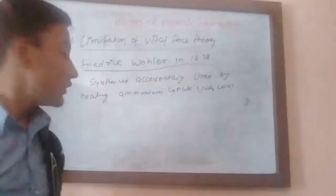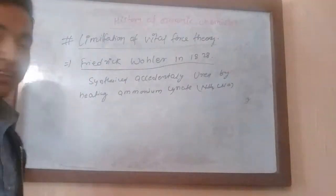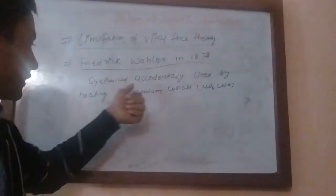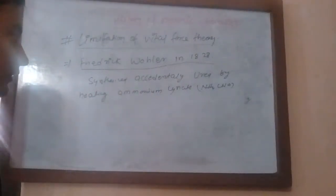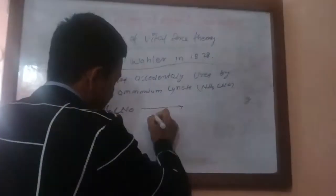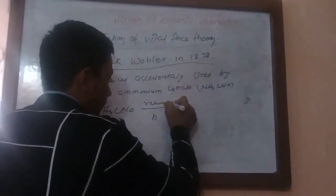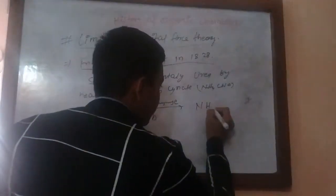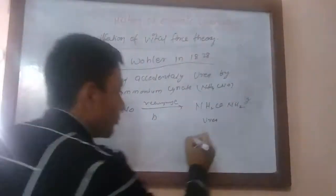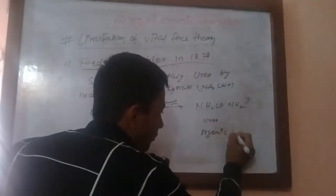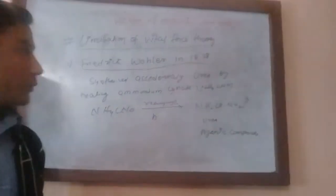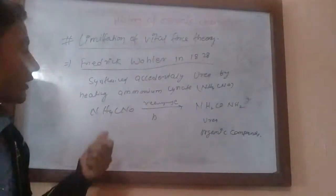Friedrich Wöhler in 1828 accidentally synthesized urea in the lab by heating ammonium cyanate. The compound rearranged and formed urea, and urea is an organic compound. At that time, other people did not believe Wöhler because they said he was against the gods, so his work was not properly recognized.